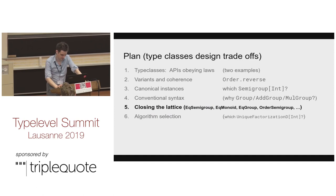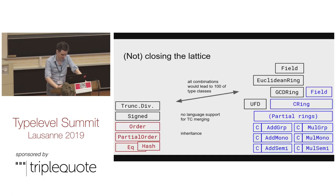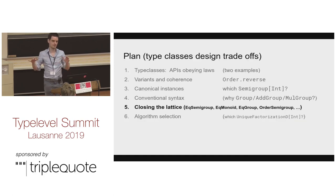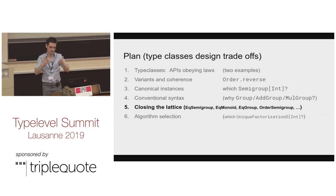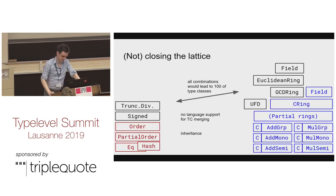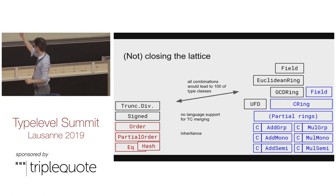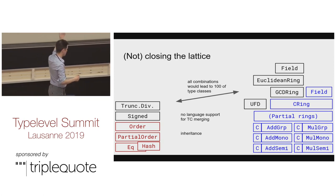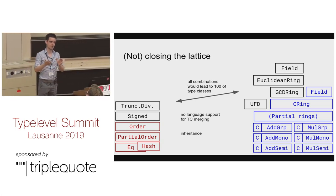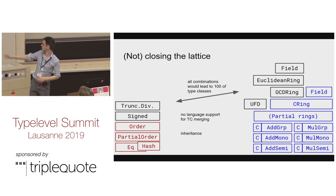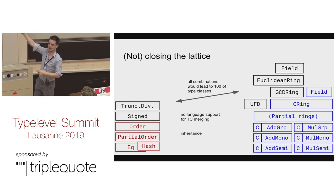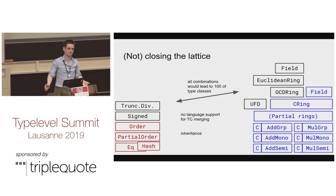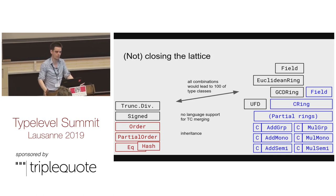When you have different capabilities for your type and want to create a type class at the top of the inheritance lattice for every combination, it becomes extremely messy. We have a list of things on the left: equality, partial order, order, signed, and so on. On the right: what are the capabilities of our numbers? Unsigned integers don't have a notion of negate. So things live at every step of this ladder. If we want to close that hierarchy, we'd need all pairs of left and right — maybe 200 to 300 classes or traits in a library. We won't do that. The problem is we have no support for type class merging.